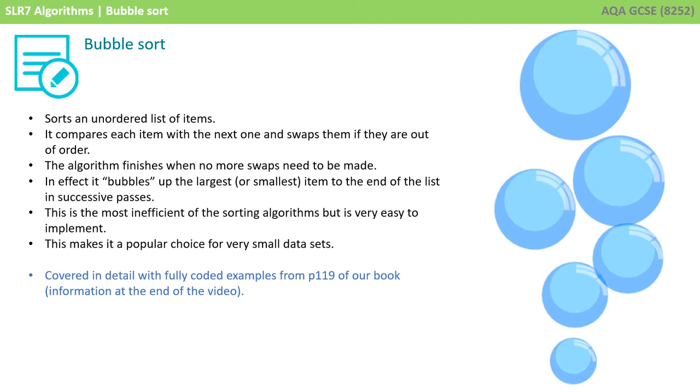It sorts an unordered list of items. It compares each item with the next one and swaps them if they're out of order. The algorithm finishes when no more swaps need to be made. In effect, it bubbles up the largest or smallest item to the end of the list in successive passes. This is the most inefficient of the sorting algorithms, but it's very easy to implement. This makes it a popular choice for very small datasets.